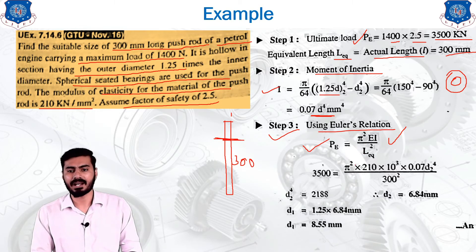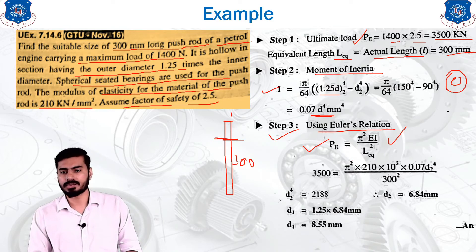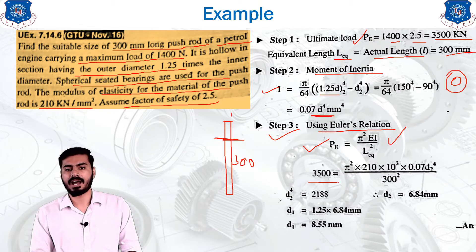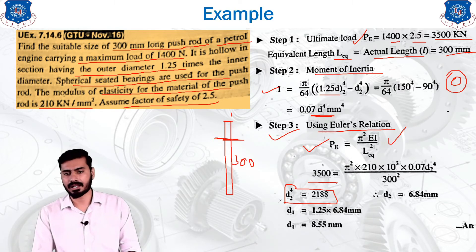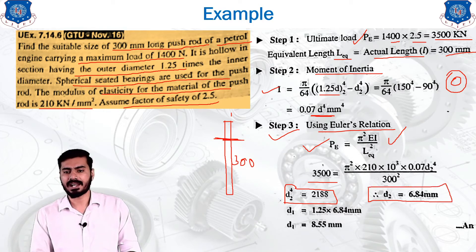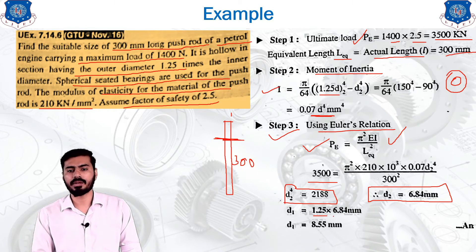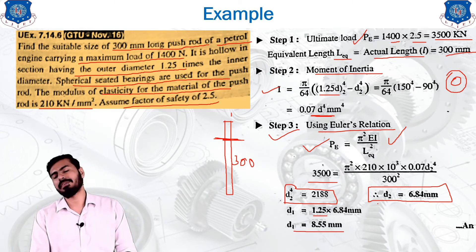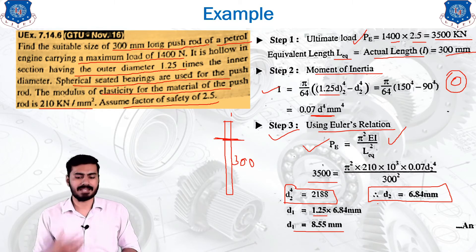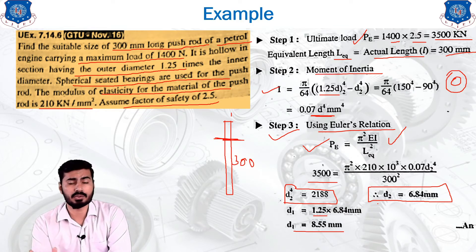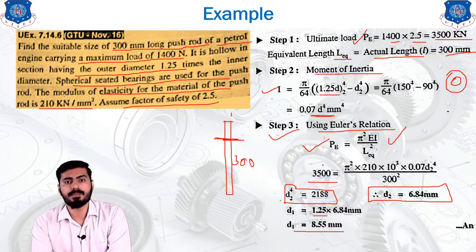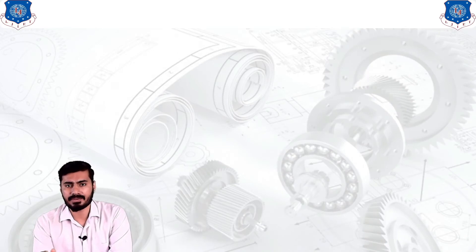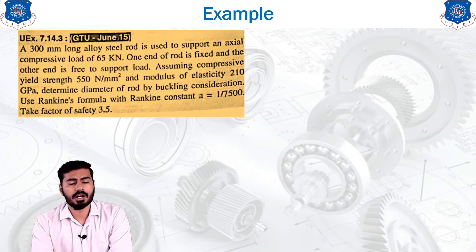The Euler's equation is P_e = π²EI / L_e². Substituting values into this equation, you can calculate the answer in terms of d. The d^4 value comes out to be 2188, and taking the fourth root gives d = 6.84 mm. Multiplying by 1.25 gives the outer diameter as 8.55 mm. The condition for using Euler's equation is that the length of the column should be larger than the cross-section dimension.